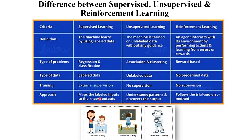Regarding approaches: in supervised learning, it maps labeled input data to known output because the output is given. In unsupervised learning, you need to understand patterns and discover the output. In reinforcement learning, there is a trial and error method — the agent finds a particular path, testing whether each decision is correct or wrong. This is the main difference between supervised, unsupervised, and reinforcement learning.